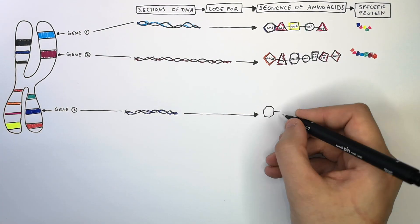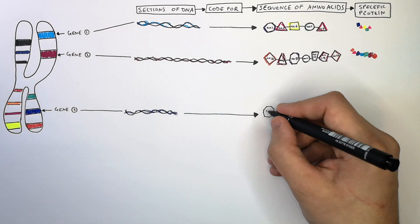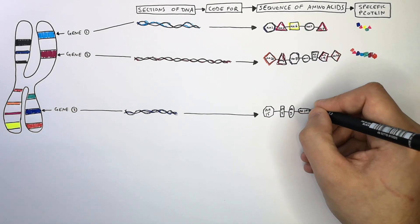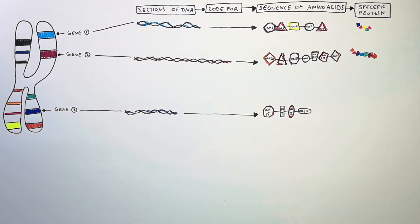And gene 3, which is the shortest section of DNA out of all three genes, is going to code for a shorter amino acid sequence which should lead to a smaller protein and therefore a different protein to genes 1 and gene 2.